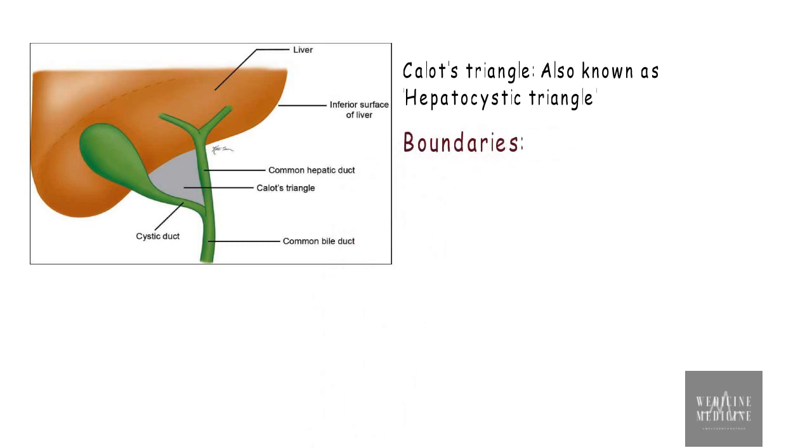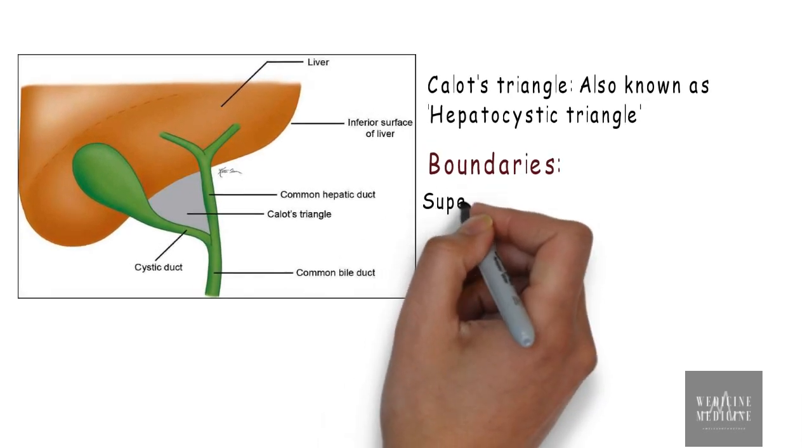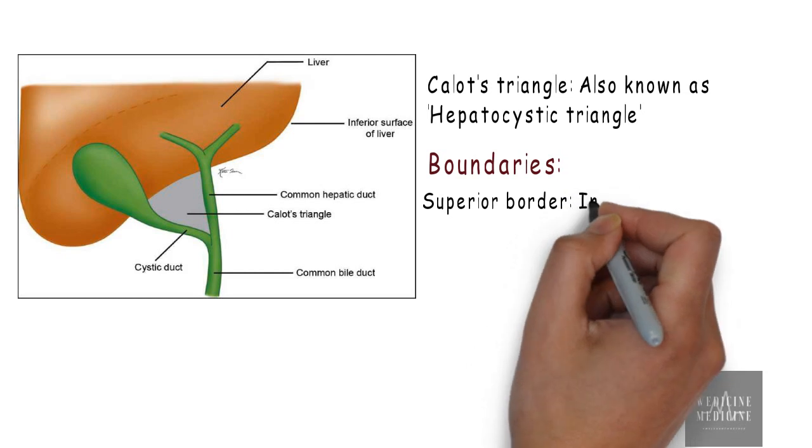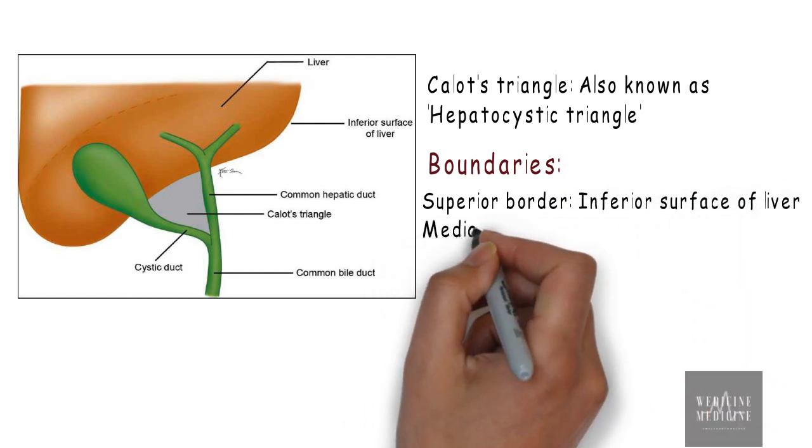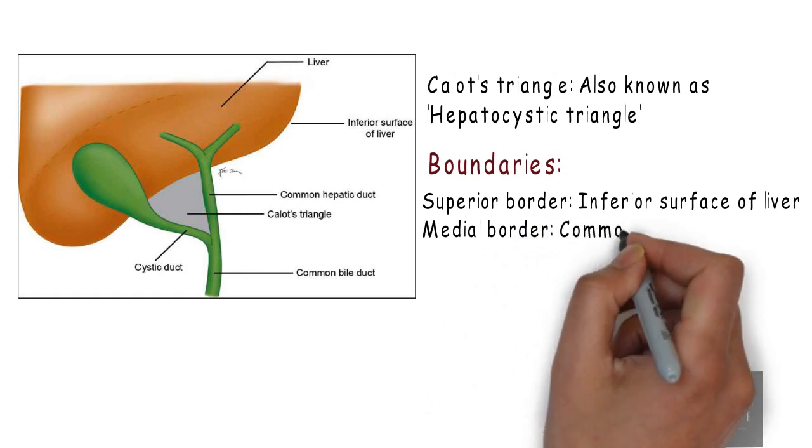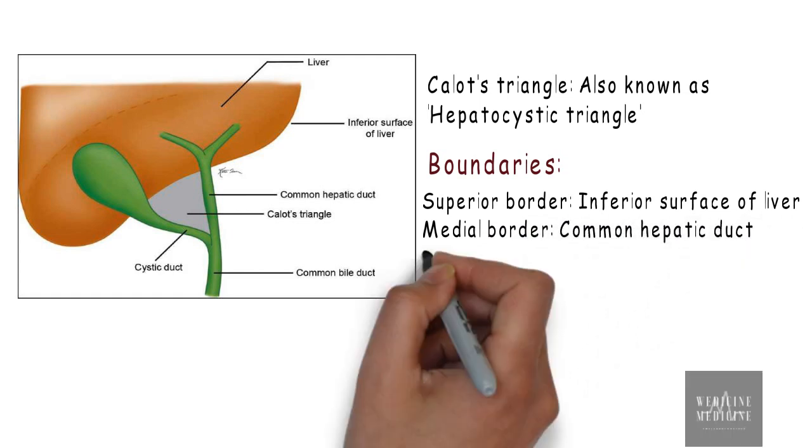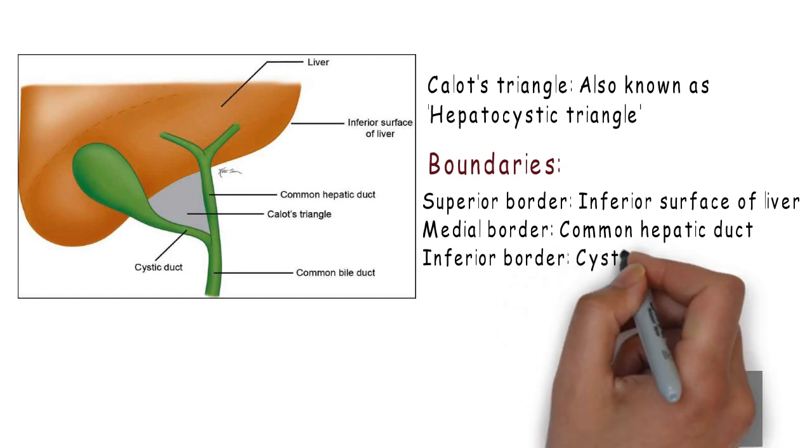No triangle in surgery is complete without its boundaries. So Calot's triangle is a triangle formed with apex directed towards liver and has superior border formed by inferior surface of liver, medial border formed by common hepatic duct, and inferior border formed by cystic duct.